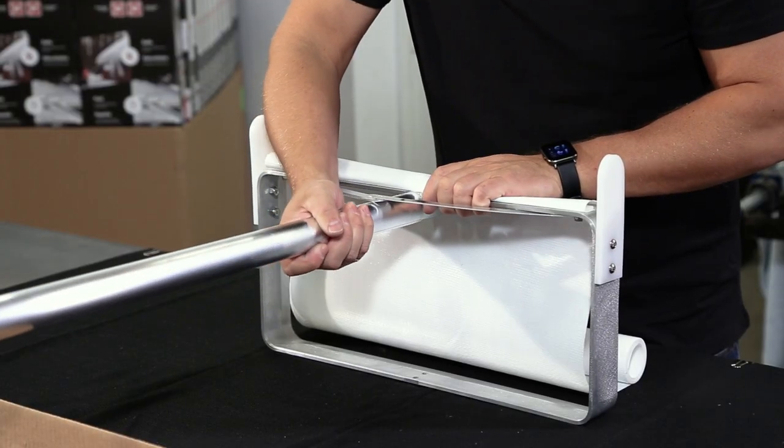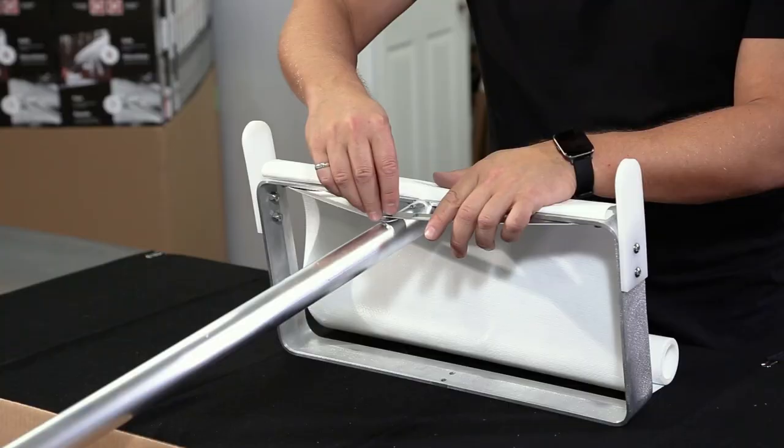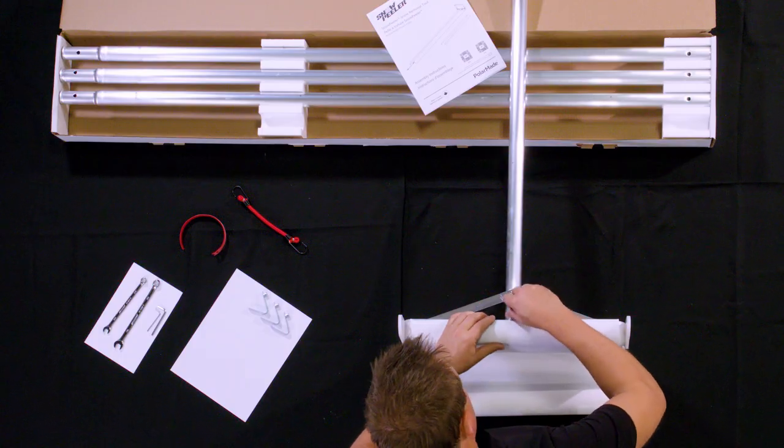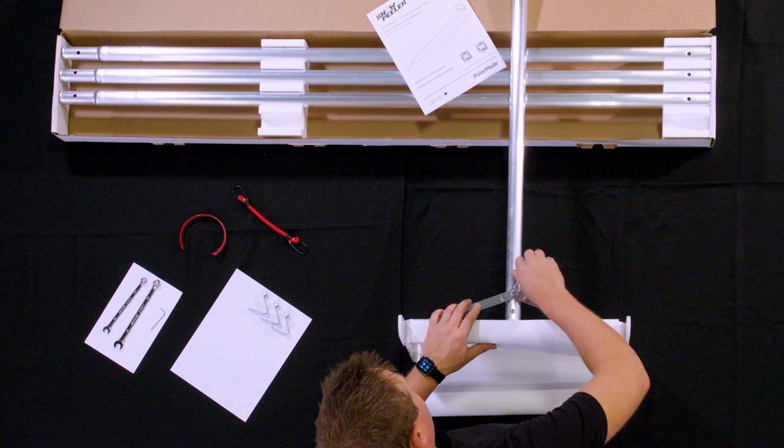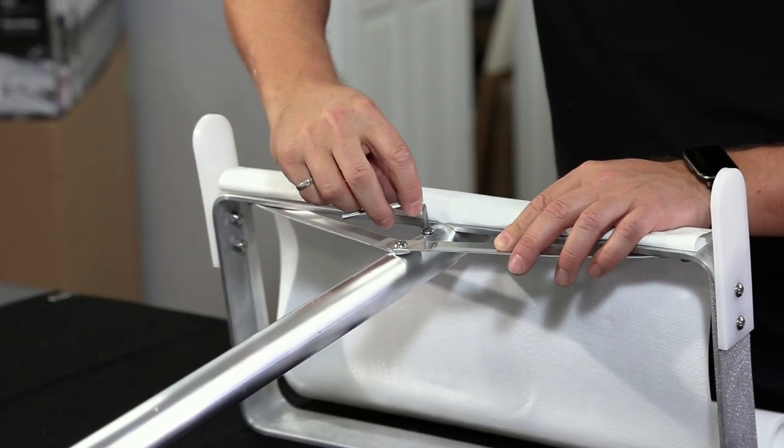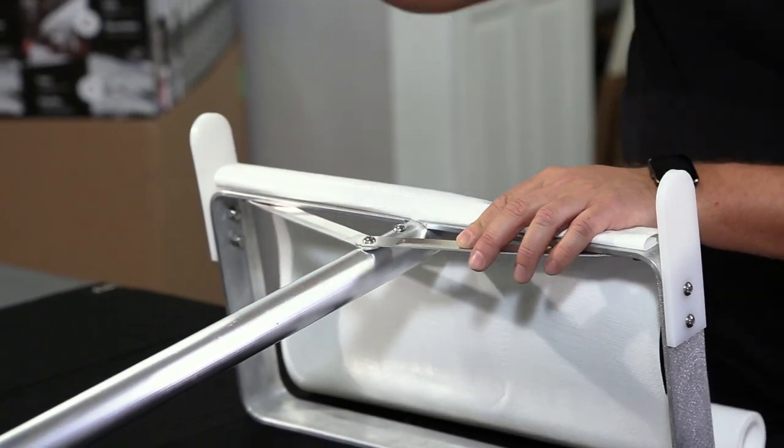Next, insert the first quarter inch round head screw through the top of the braces and into the frame pole and frame adapter. Hand tighten. Insert the second quarter inch screw directly into the frame pole and frame adapter and also hand tighten. Using the 5/32 inch hex wrench, finish tightening both screws.